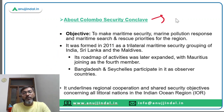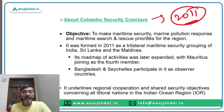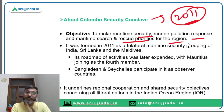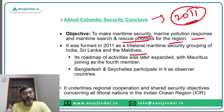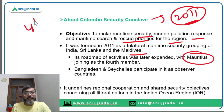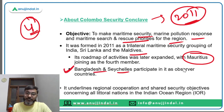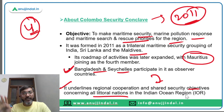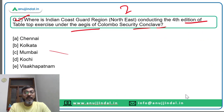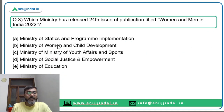The Colombo Security Conclave was established in 2011 to make maritime security, marine pollution response, and maritime search and rescue priorities for the region. It was initially formed as a tri-lateral maritime security group of India, Sri Lanka and Maldives, but Mauritius later joined as the fourth member. Bangladesh and Seychelles are observers. The conclave underlines regional cooperation and shared security objectives for all littoral nations in the Indian Ocean region. The answer is Kolkata, option B.